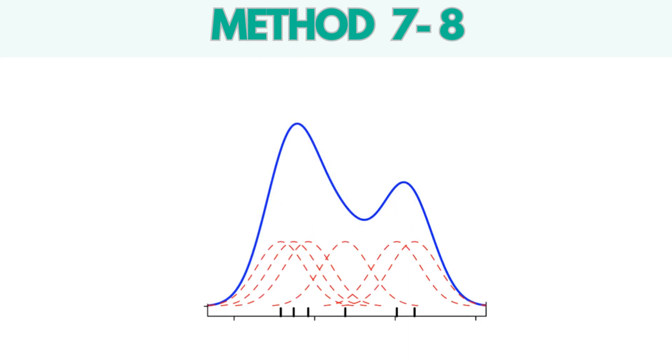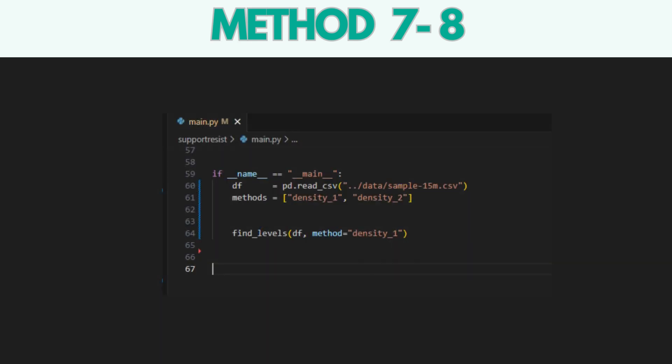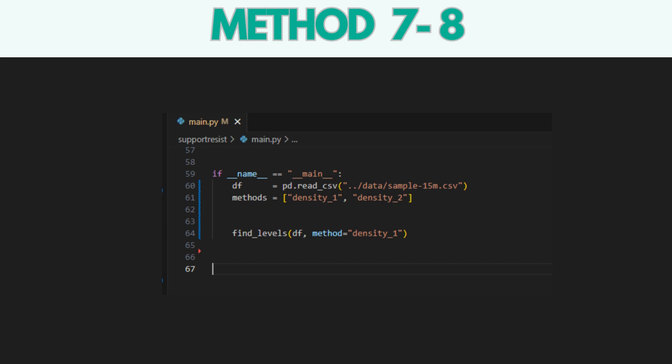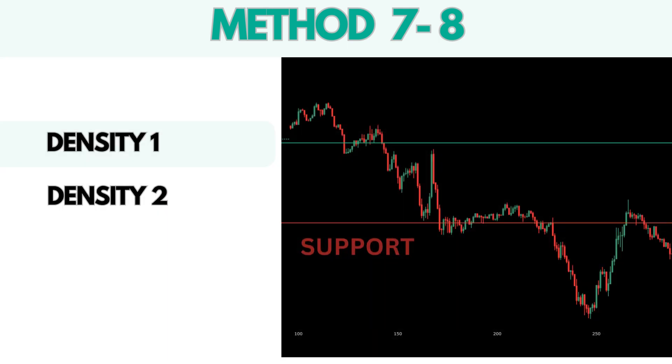The following two methods utilize the KernelDensity approach to determine support and resistance levels. KernelDensity refers to a non-parametric technique used to estimate the probability density function of a random variable. In the FindLevels function, set the method parameter to Density_1 or Density_2 to get the results. Here are the results for these methods.